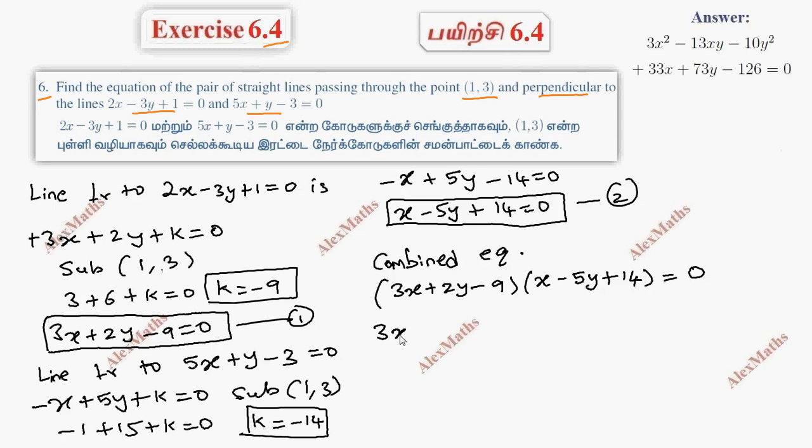Expanding this: 3x square minus 15xy plus 42x, then 2xy minus 10y square plus 28y.